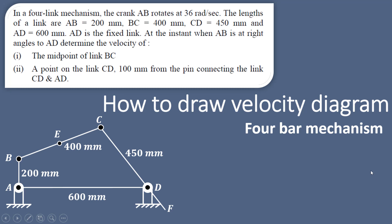In this video we'll try to understand how to draw a velocity diagram in the case of a 4-bar mechanism. The arrangement of this particular mechanism is shown here and the problem statement is also given. In a 4-bar link mechanism, the crank AB is 200 mm in length and it is rotating at 36 radians per second.